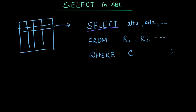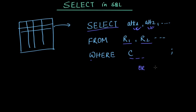Let's understand the syntax of the SELECT query. We write SELECT and then the attributes. From a table, if I want to fetch attribute1 and attribute2, we write attribute1, attribute2. Similarly we write down all the attributes we want to list, then FROM table_name. We can fetch attribute values from one table or more than one table, and then WHERE some condition C — a single condition or multiple conditions combined with logical operators like OR, AND, etc. This is the basic syntax of SQL SELECT.